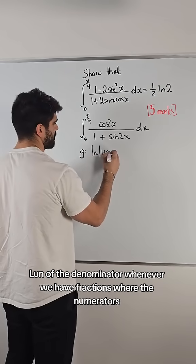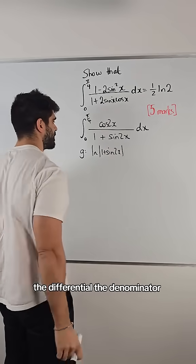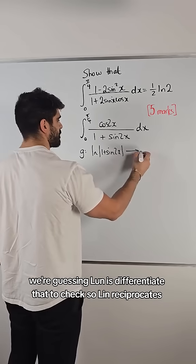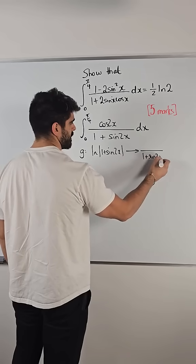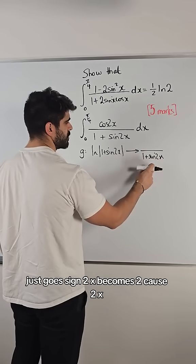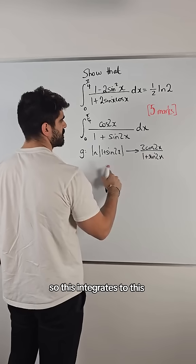Ln of the denominator, whenever we have fractions where the numerator is the differential of the denominator, we're guessing ln. Let's differentiate that to check. So, ln reciprocates. Then, we differentiate the denominator to get the top. 1 just goes, sine 2x becomes 2 cos 2x. So, this integrates to this.